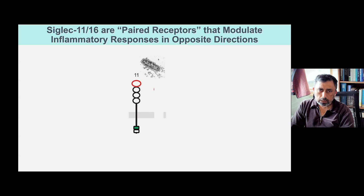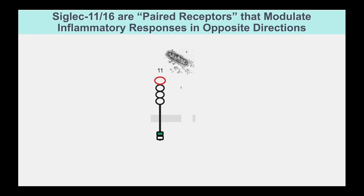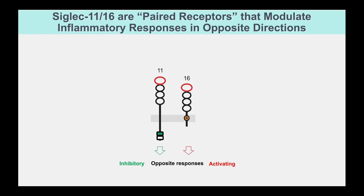Here's Siglec-11. Here's the E. coli K-1 coming in with polysialic acid, binding to Siglec-11 and saying, 'shut down, I belong here.' Along comes Siglec-16, which says, 'we're going to get you — we recognize you're foreign because we get the opposite reaction.' So you have inhibitory Siglec-11 and activating Siglec-16 doing opposite responses. But the K-1 pathogen is not normally in the brain — the vast majority of your life, not at all, we hope. In fact, Siglec-11 has common brain ligands mediating other functions in the brain.